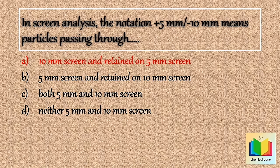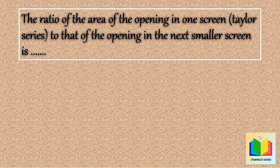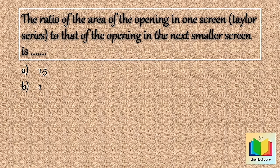Next question: The ratio of the area of the opening in one screen of the Tyler series to that of the opening in the next smaller screen is — Option A: 1.5. Option B: 1. Option C: Root 2. Option D: None of these.